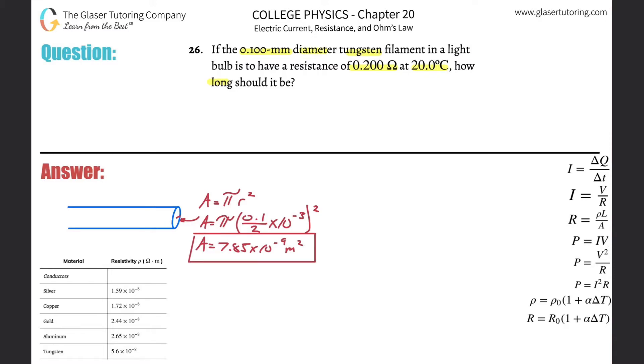Alright, so that is the cross-sectional area. Now they want to know how long this wire has to be, so L is the question mark. And they also tell us that it's tungsten. Now they tell us the resistance of that tungsten R is going to be 0.2 ohms. Okay, great.